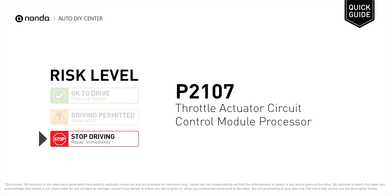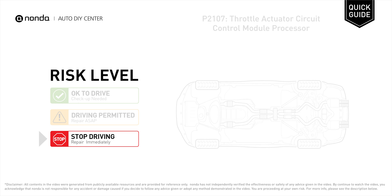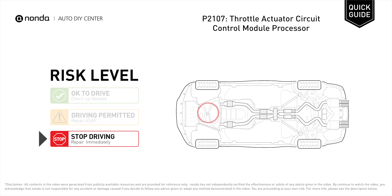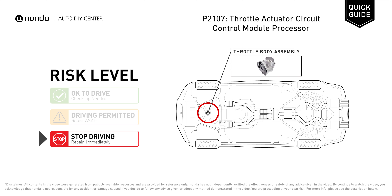P2107 is a diagnostic trouble code for throttle actuator circuit control module processor. Under this circumstance, stop driving and repair your vehicle immediately. It means there is a malfunction within the throttle control module processor.